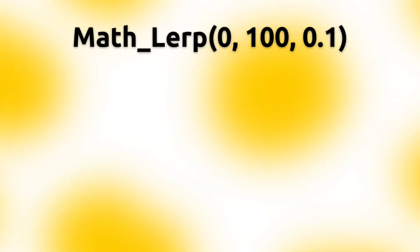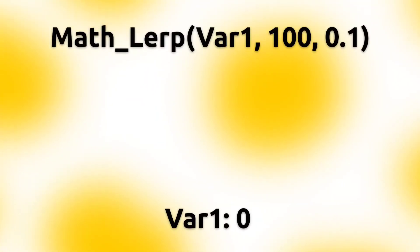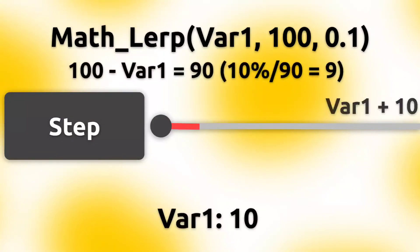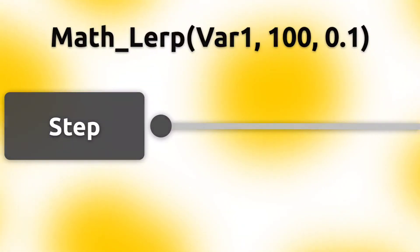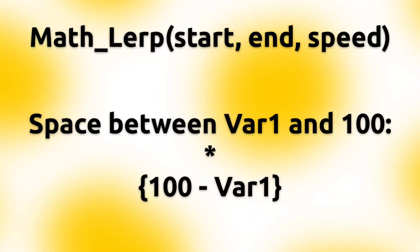We can change the script with the variable as starting value. At this moment, the variable changes and always adds 10% to the start value and decreases the space between start and end.